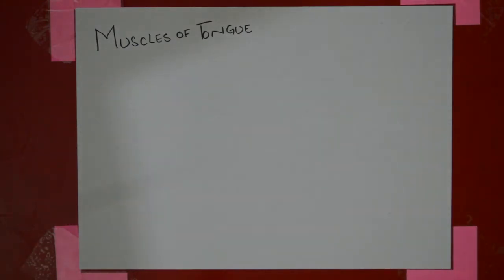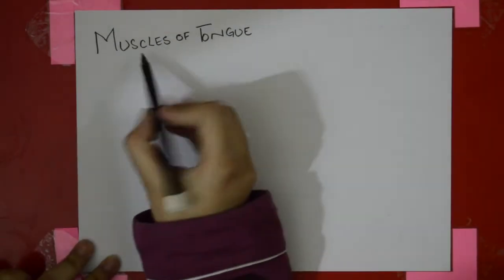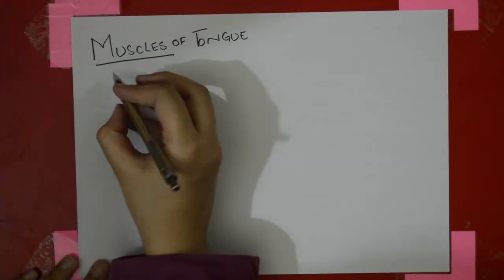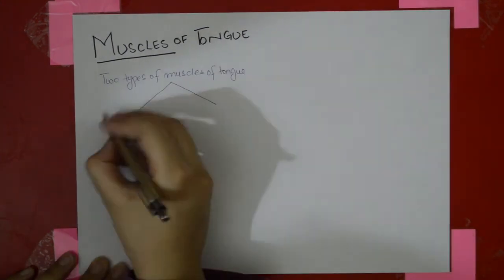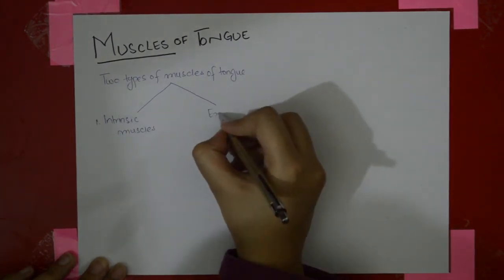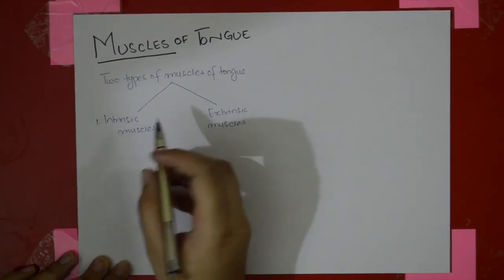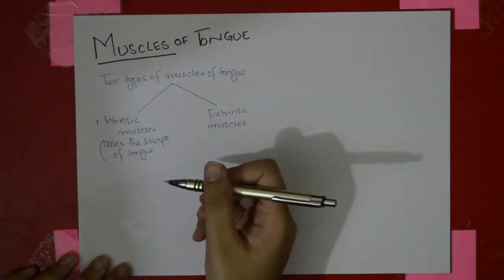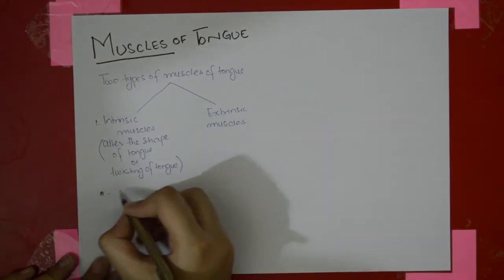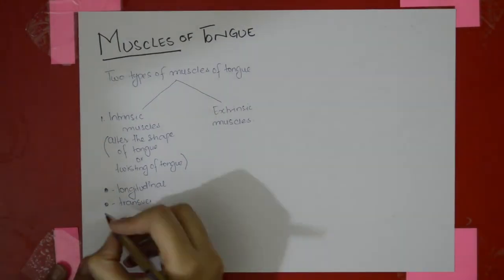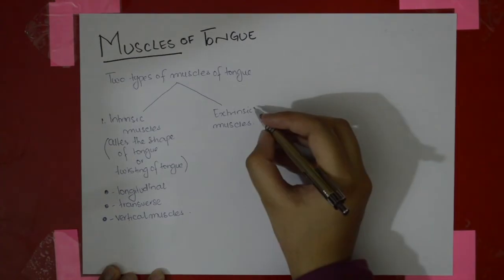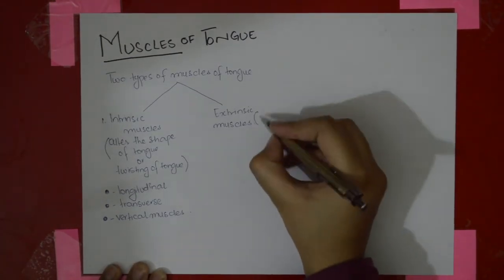The next very important topic of the tongue is the muscles. There are two types of muscles of the tongue: intrinsic muscles and extrinsic muscles. The intrinsic muscles help in altering the shape of the tongue — you can say they are involved in the twisting of the tongue. They include longitudinal, transverse, and vertical muscles. The extrinsic muscles are involved in the movement of the tongue.